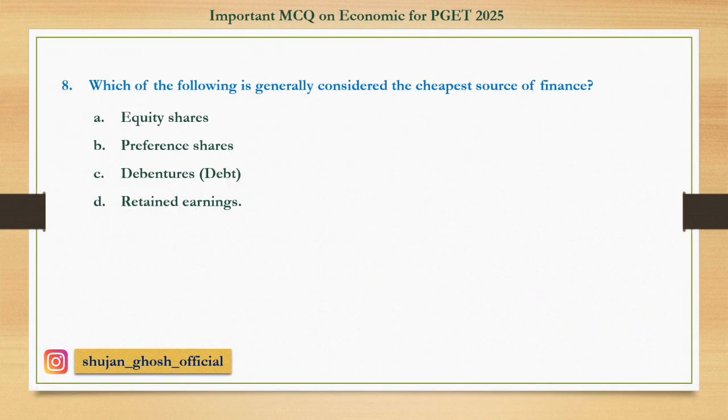Question number eight: Which of the following is generally considered the cheapest source of finance? Option A: equity shares. B: preference shares. C: debentures (debt). D: retained earnings. Answer: debentures, that is, debt.